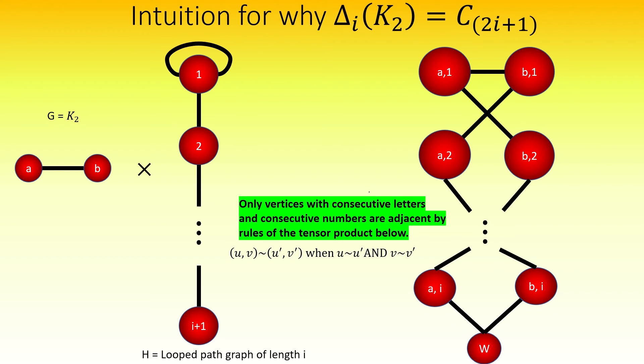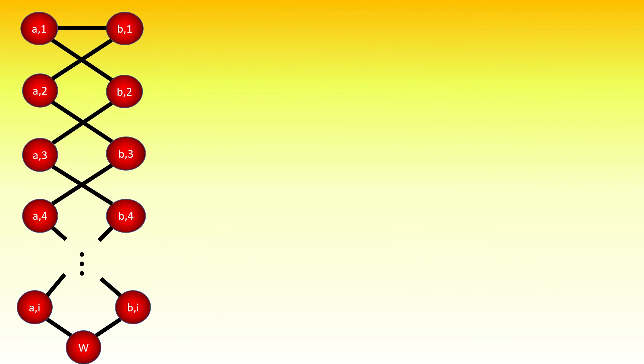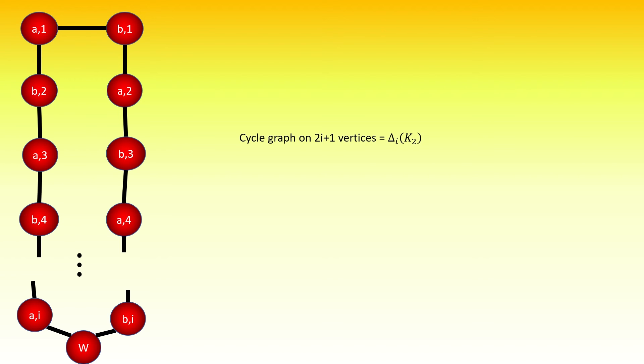Here's an easier way to see it: showing a fuller view and then swapping vertex positions at every other row to uncross the edges, we clearly obtain a cycle graph. And since we had 2i plus 1 vertices, this is a cycle graph with 2i plus 1 vertices, as we guessed.